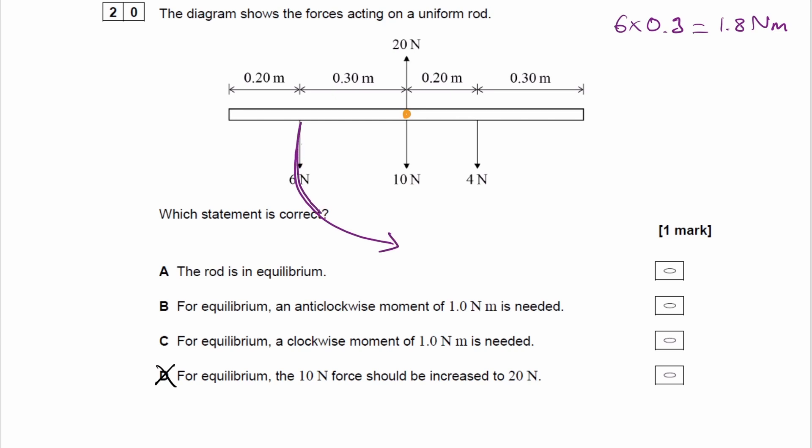So that would be an anticlockwise moment. Anticlockwise because we start from the point at which the force acts, we go around the pivot, and that is the anticlockwise direction. That would be 1.8 Newton meters.